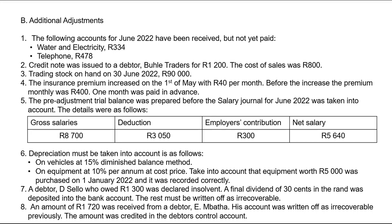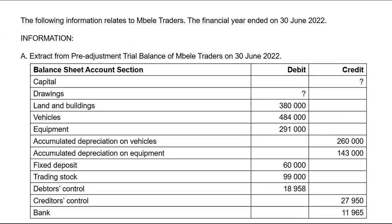Adjustment 3: Trading stock on hand on 30 June 2022 was 90,000. This is the physically counted value. In the trial balance, the trading stock balance comes from the general ledger trading stock account — built up from source documents via CPJ, creditors control CJ, DAJ cost of sales entries — and the balance brought down is 99,000.